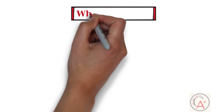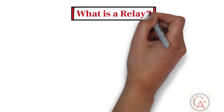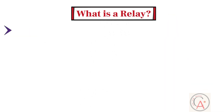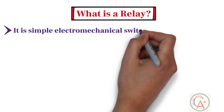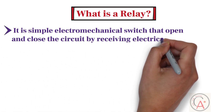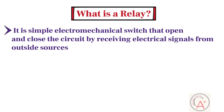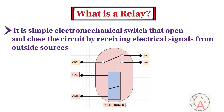Let's start with one basic question: what is a relay? A relay is a simple electromechanical switch that opens and closes the circuit by receiving electrical signals from outside sources. When an electromechanical relay is activated by an electrical signal, current passes through a coil of wire. This creates a magnetic field which attracts a steel armature. The metal armature is attracted to the magnetized coil, and as a result, the common contact on the end of the armature moves to a different set of output contacts.